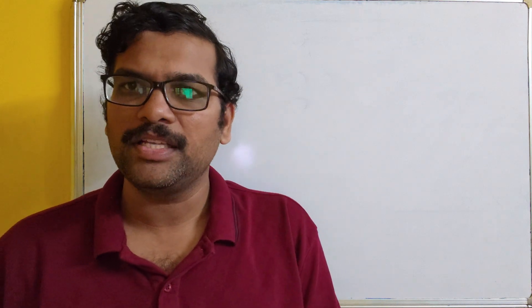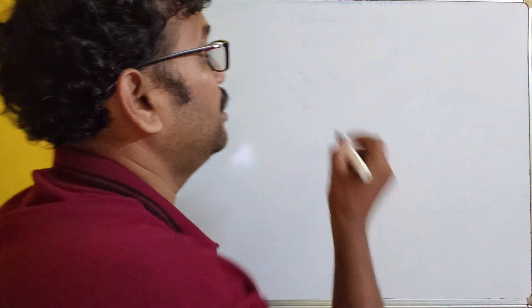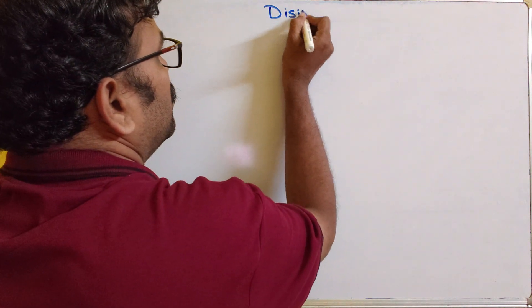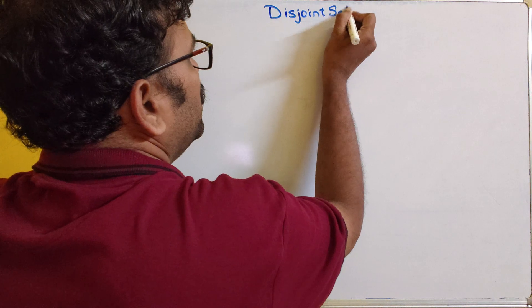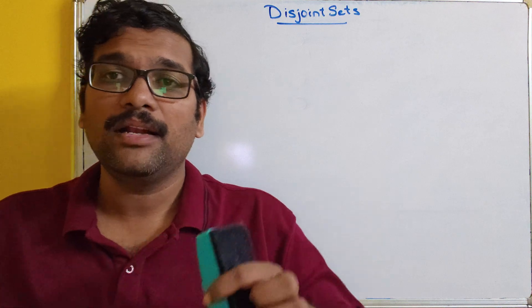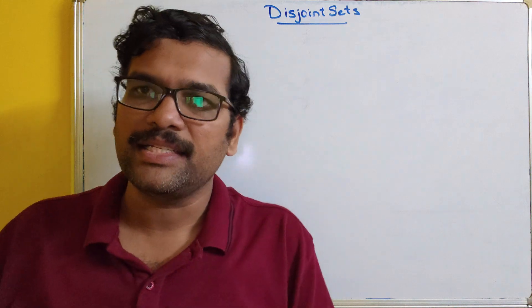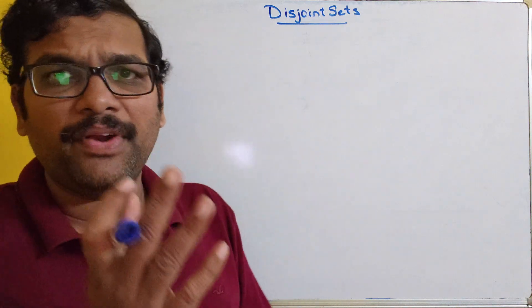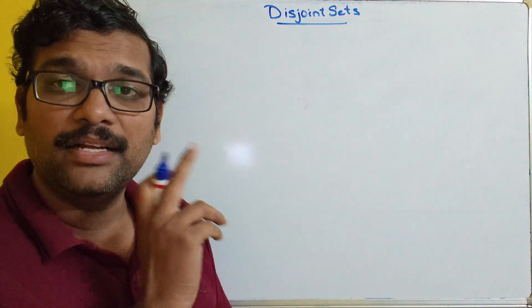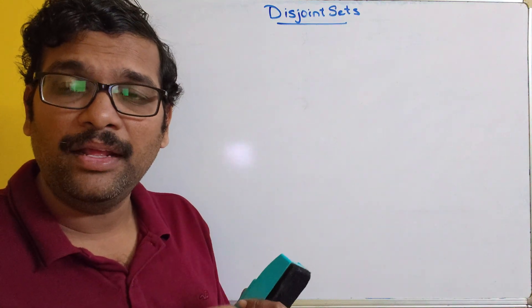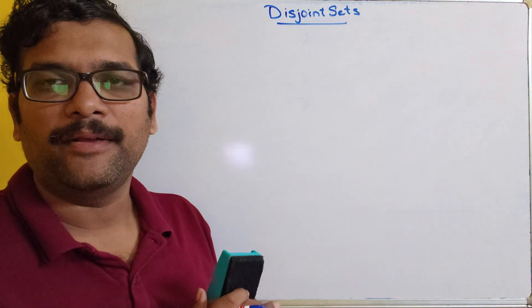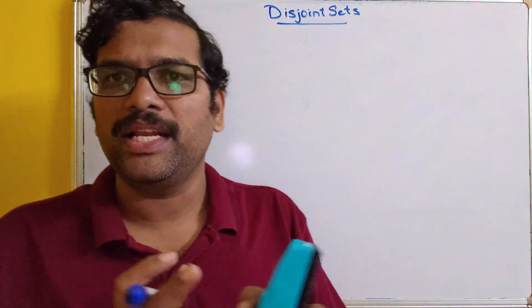Hello friends, welcome back to our channel. Today we'll see one more concept in algorithms: disjoint set operations — weighted union. In our previous session we discussed about disjoint sets. If there is no common element between two sets, we call them disjoint sets. There are different operations on disjoint sets: simple union, simple find, weighted union, and collapsing find. In our previous session we discussed simple union and simple find.